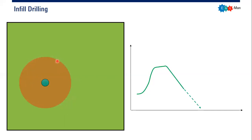Let's say this well has now reached the pseudo steady state flow regime — the drainage area has been limited to this boundary, so we have a more or less constant drainage area. The production then starts to decline. We can use this profile to perform decline curve analysis and construct a forecast: if we continue producing from this reservoir using this one well, we will have a forecast like this.